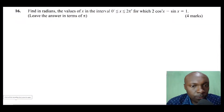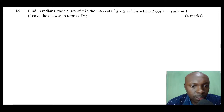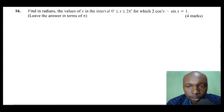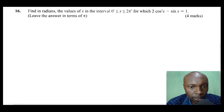Hello viewers and welcome. Let us solve this question on trigonometric equations. This is KCC 2016, Paper 2, Question number 16. The question reads: find, in radians, the value of x in the interval 0 to 2π radians, for which 2cos²x minus sin x equals 1. Leave your answer in terms of pi.